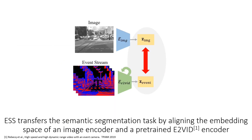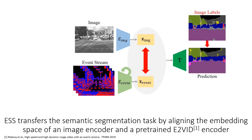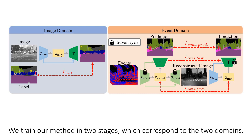Our method transfers the semantic segmentation task by aligning the embedding space of an image encoder and a pre-trained e2vid encoder. This alignment enables the training of a task network on the shared embedding space using only the image labels. The alignment of the embedding space and the training of the task network is performed in two alternating optimization stages corresponding to the two sensor domains.